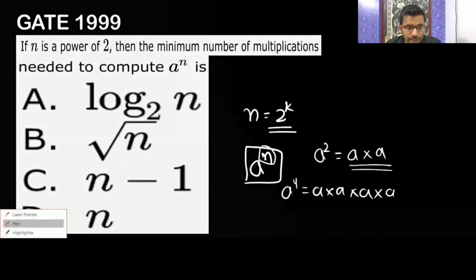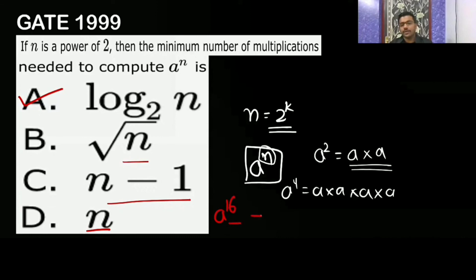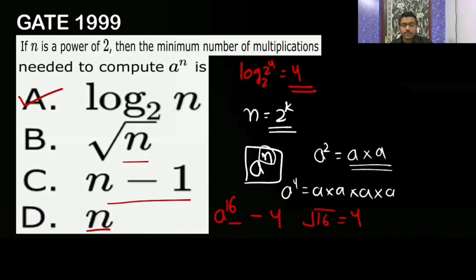So the correct answer is log n. You can also verify by elimination: for a to the power 16 we need 4 multiplications, and log base 2 of 16 equals 4. Root n gives root 16 equals 4, which coincidentally matches here but will be incorrect for other cases. n minus 1 gives 15, which is also incorrect. So log n is the confirmed correct answer.